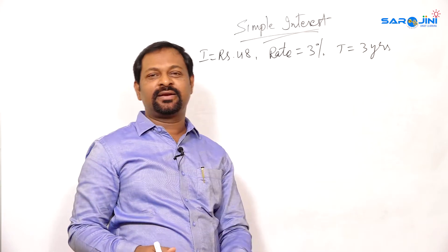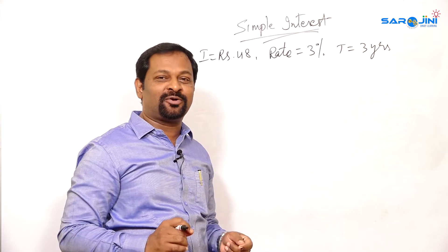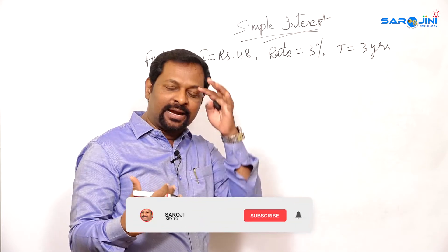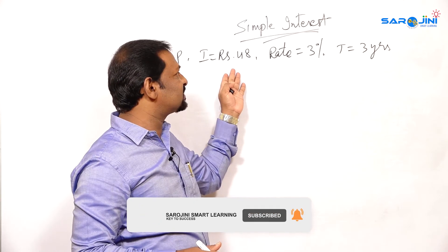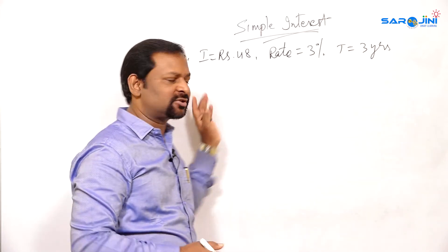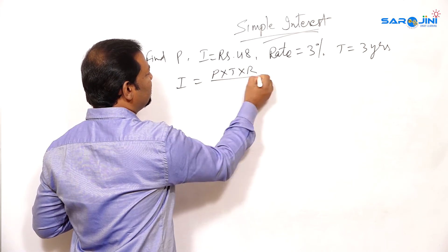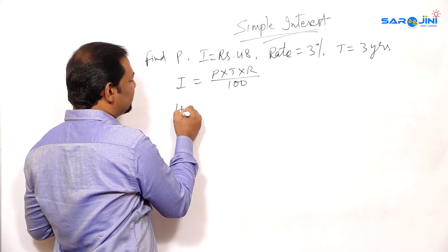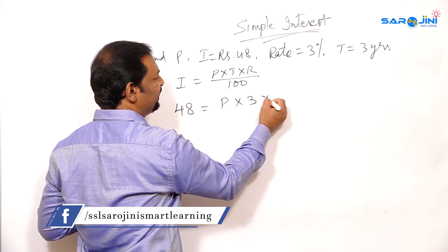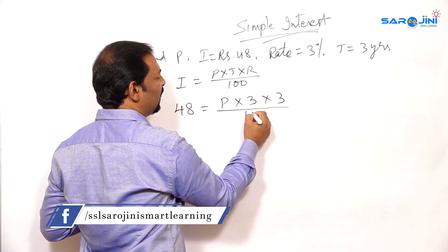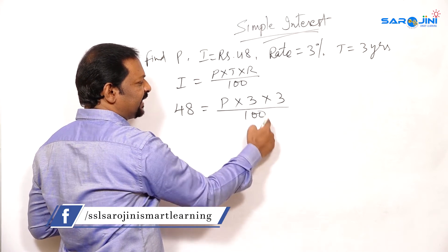We will check one more question. Here there is another different type of question — now you are going to find out the principal amount. You don't know the principal amount; the rate of interest and time are given. We are used to finding out interest, but here interest is given, rate is given, time is given, but principal is not given. I is equal to P into T into R divided by 100. I is 48, so 48 is equal to P into time is 3 years, into rate of interest is 3, whole divided by 100.